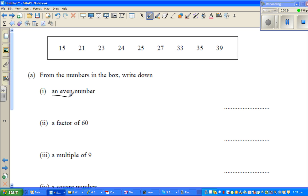Write down an even number. Even numbers start from two - zero can also be considered as an even number. 15 is odd, 21 is odd, 23 is odd, so 24 is an even number. 25 is odd, 27 is odd - they're all odds, so the only even number is 24.